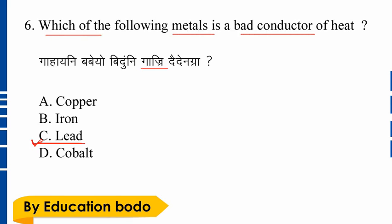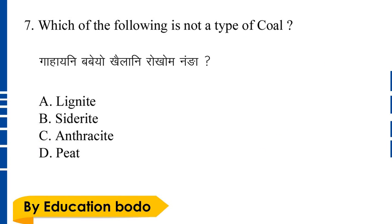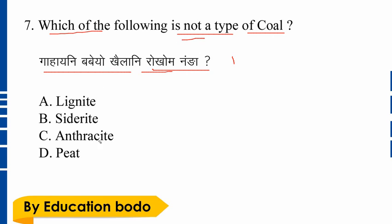Question number seven: Which of the following is a type of coil? Option B is the right answer — Siderite.